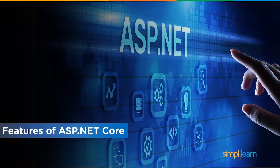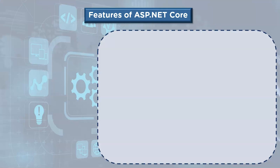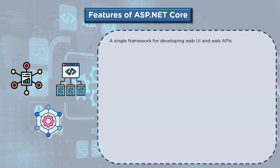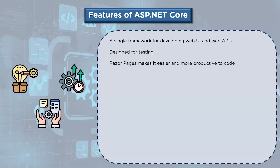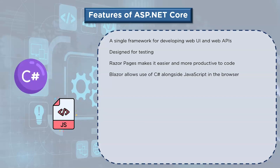ASP.NET Core provides a single framework for developing web UI and web APIs. It is designed for testing and provides Razor Pages that make it easier and more productive to code page-focused scenarios. Blazor allows use of C# alongside JavaScript in the browser, sharing server-side and client-side application logic built in .NET.